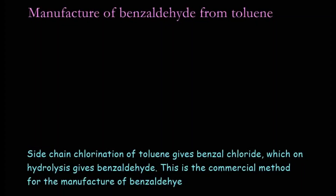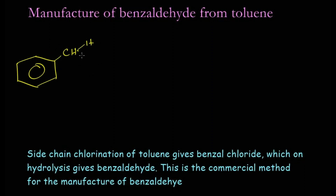In this reaction we are going to manufacture benzaldehyde from toluene. Let's write the structure of toluene first — a benzene ring with CH₃ attached, written as CH₃ with the three hydrogens shown.